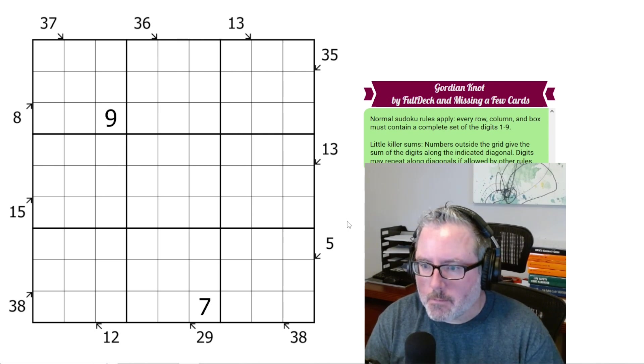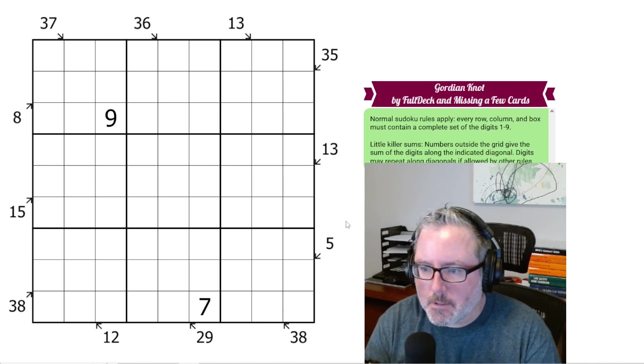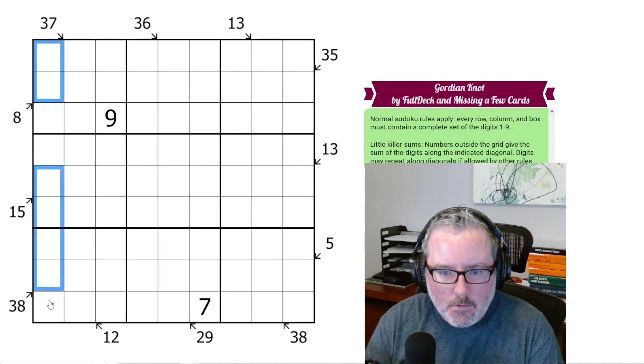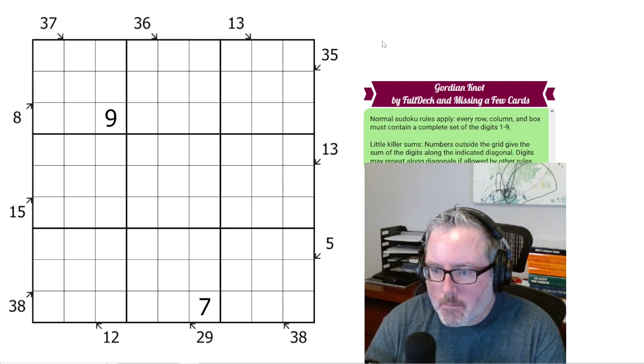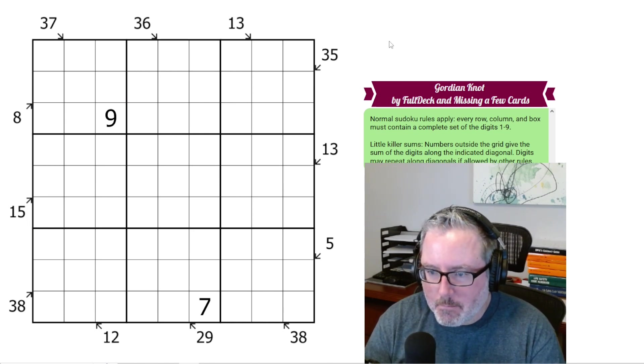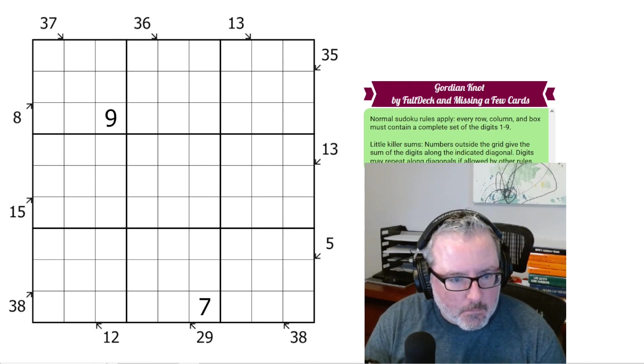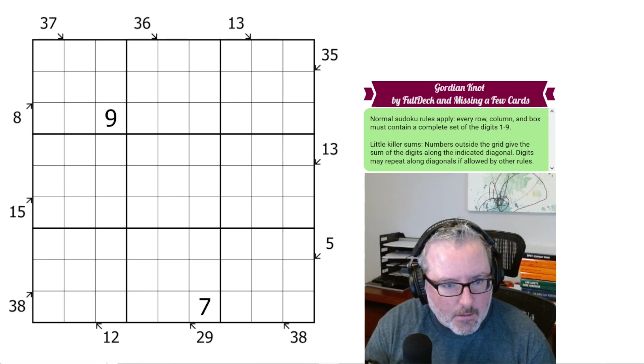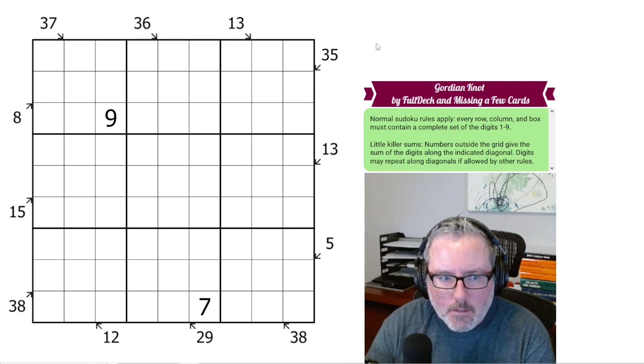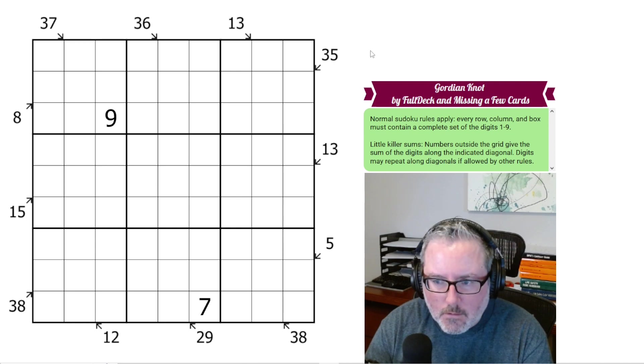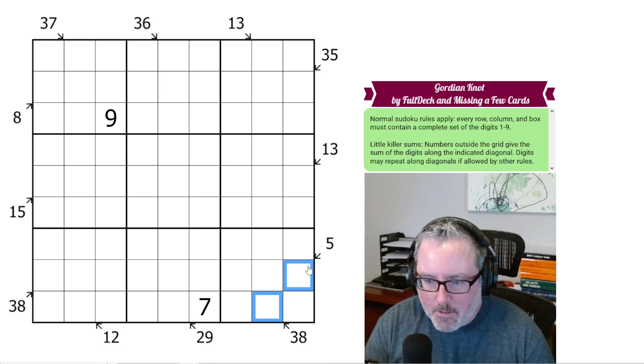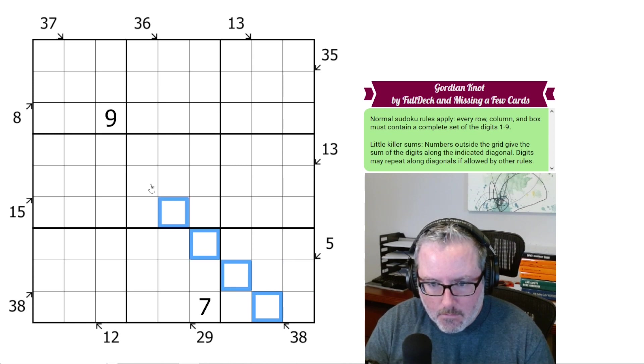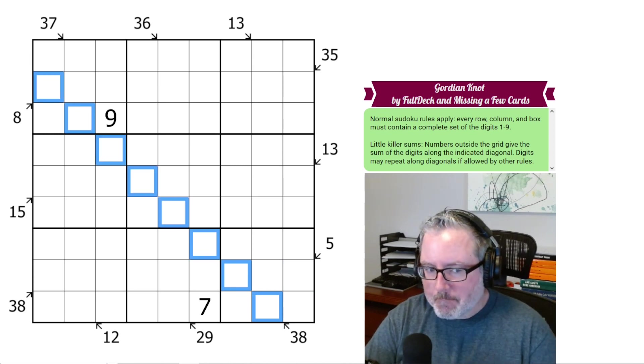So we've got normal Sudoku rules apply. Whatever we row, column, and box must contain a complete set of digits 1 through 9. Just your normal Sudoku rules. And then we have little killer sums. The numbers outside the grid give the sum of the digits along the indicated diagonal. It may repeat if allowed by other rules. And those are the rules.